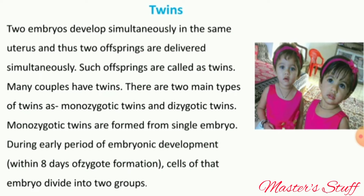In monozygotic twins, during the early period of embryonic development — within eight days of zygote formation — the embryo divides into two groups, each developing into a separate individual.